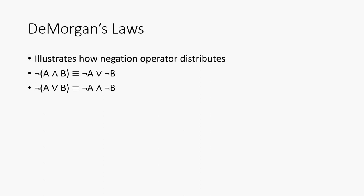So, this is DeMorgan's Law. This is a little bit different. And it illustrates how a negation operation is distributed. So, the negation of quantity A and B is going to be equivalent to the negation of A or the negation of B. And similarly, for the disjunction, negation of A or B is going to be equivalent to the negation of A and the negation of B.